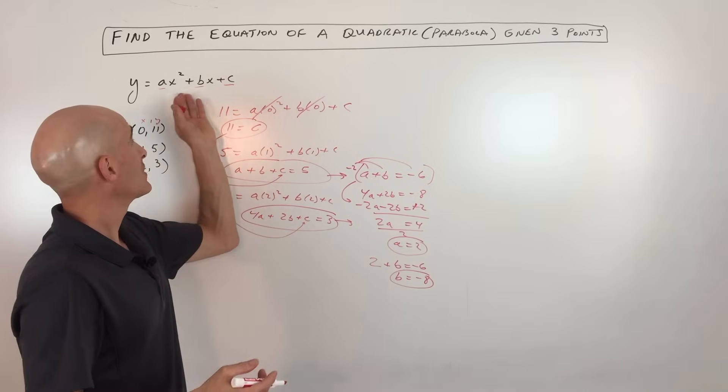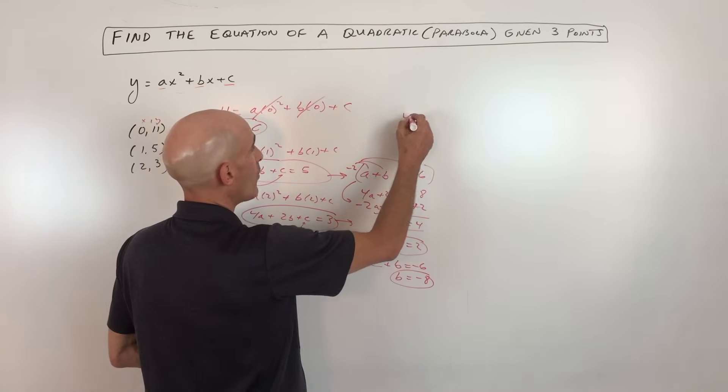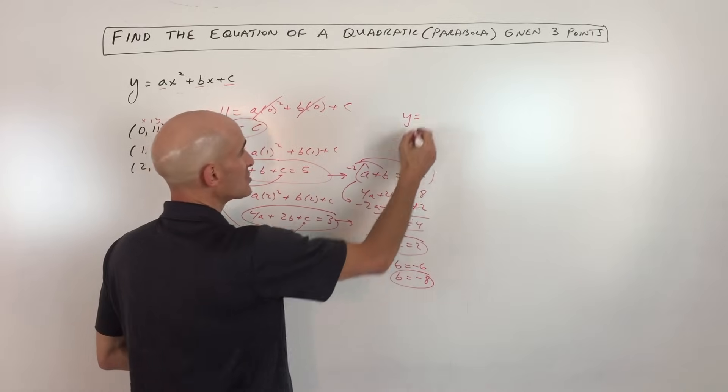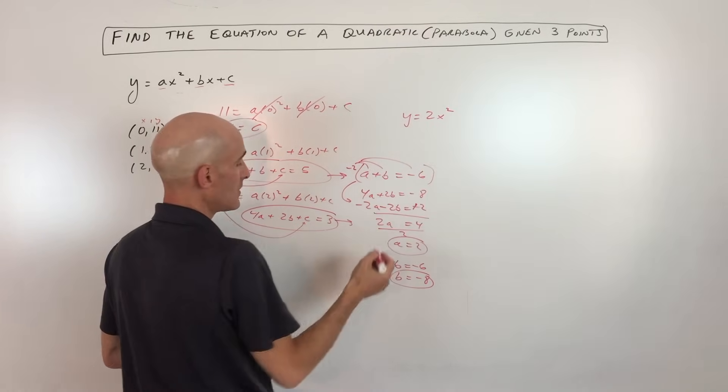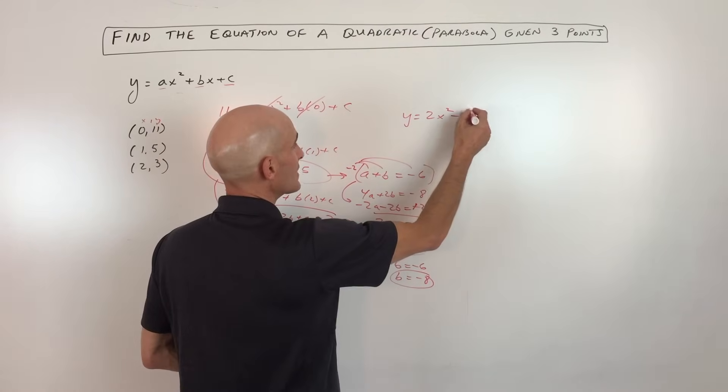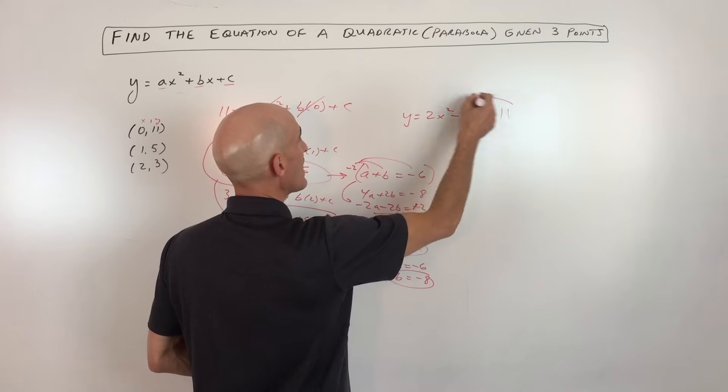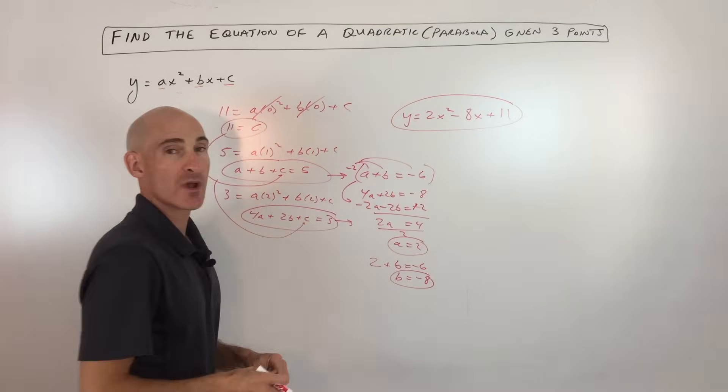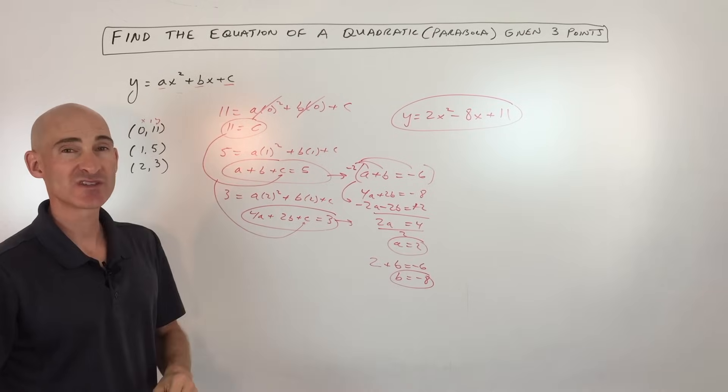We can put it back together into the equation here. So we've got y equals a, which is 2. So that's 2x squared. b, which is negative 8. So that's negative 8x. Plus c, which is 11. And we have our equation in the general form, y equals ax squared plus bx plus c.